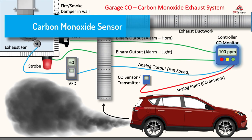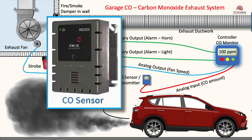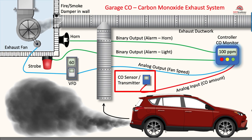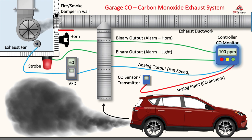Carbon monoxide sensor. Carbon monoxide CO sensors are commonly used in conjunction with garage exhaust systems to monitor the concentration of CO in the air and ensure the safety of occupants. Garage exhaust systems are designed to remove exhaust gases, including CO, from the garage space. They typically include ventilation fans or ductwork connected to the outside. The CO sensor can increase the fan speed in conjunction with a VFD when certain concentrations of carbon monoxide are reached. The activation of the exhaust system helps to reduce CO levels, providing a safer environment for occupants. When the CO concentration exceeds the threshold, the sensor can provide an audible or visible alarm to alert occupants of the hazardous conditions.